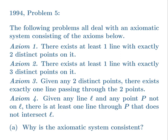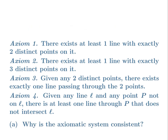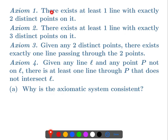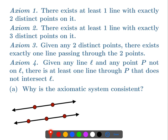The first question is: why is this axiomatic system consistent? We haven't really talked about the axioms yet, but let's start looking at them. There has to be at least one line with exactly two distinct points on it, so we go ahead and make a line like that. And then there has to be at least one line with exactly three distinct points on it, so I'll draw a line like that, and let's see if the other axioms are true.